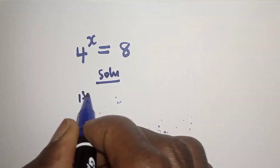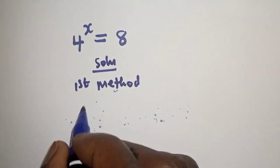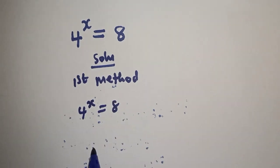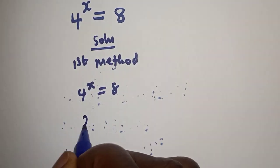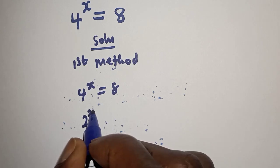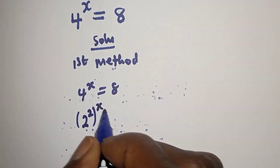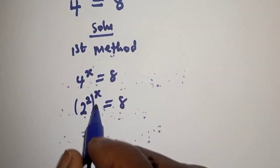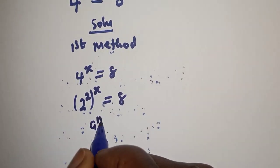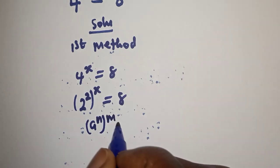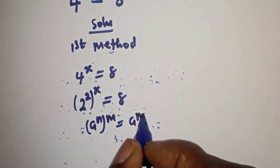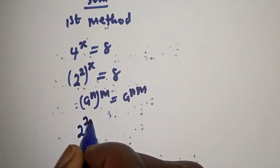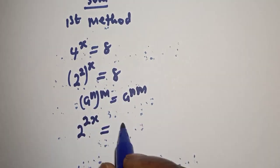First method: we have 4 raised to power s is equal to 8. Then 4 raised to power s can be written as 2 raised to power 2, to the power of s, is equal to 8. Take note that if you have a raised to power n raised to power m, this is equal to a raised to power n times m. So you have 2 raised to power 2s.